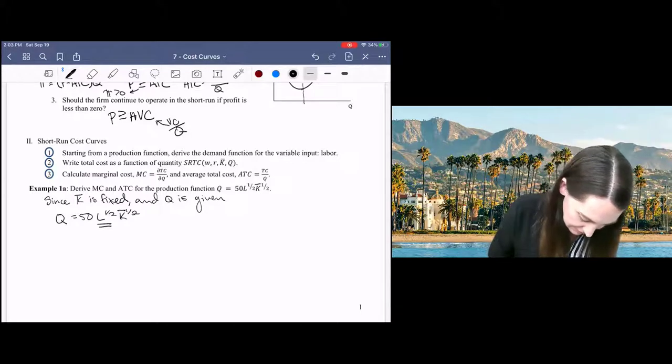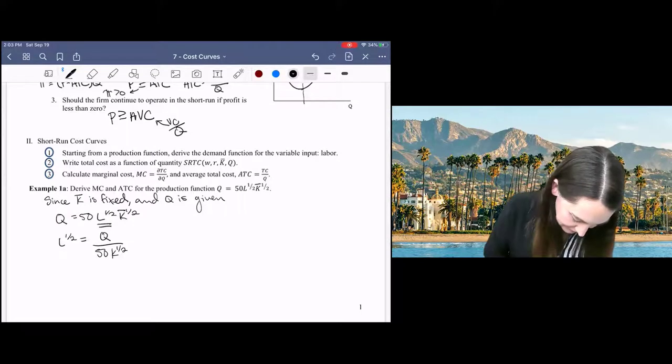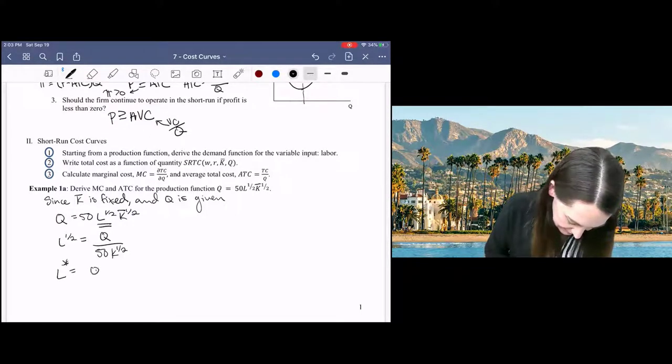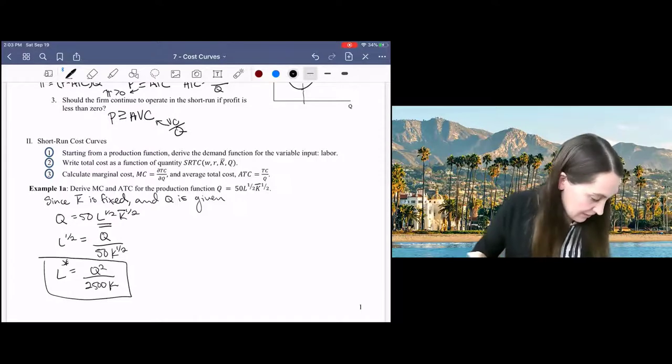labor demand will just be a function of capital and output according to our production function. So if I rearrange this, I've got L to the one-half equals Q over 50k to the one-half. And then I'll square both sides. I get Q squared over 2,500K. Okay, there we go.